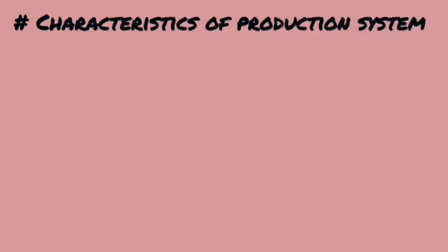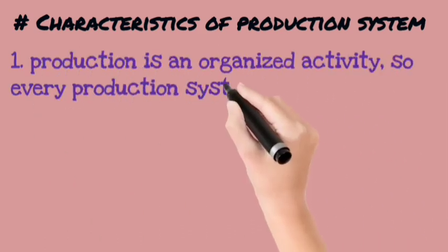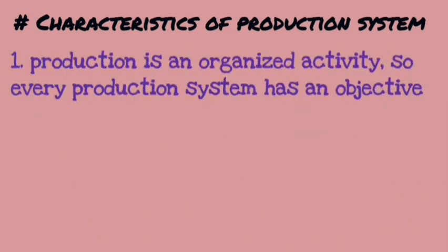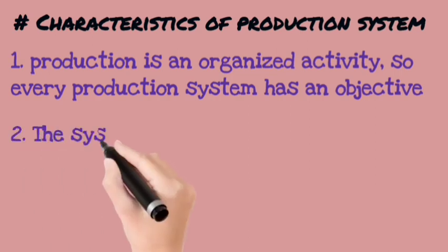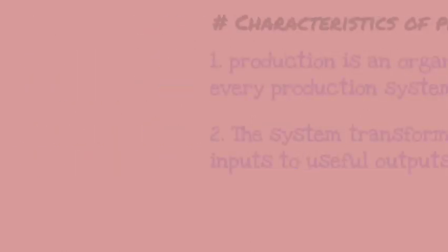We will see some characteristics of the production system. First, production is an organized activity — it is fully planned and has a particular objective. Second, this is a system which takes your inputs, allows you to modify those inputs, and gives useful outputs.